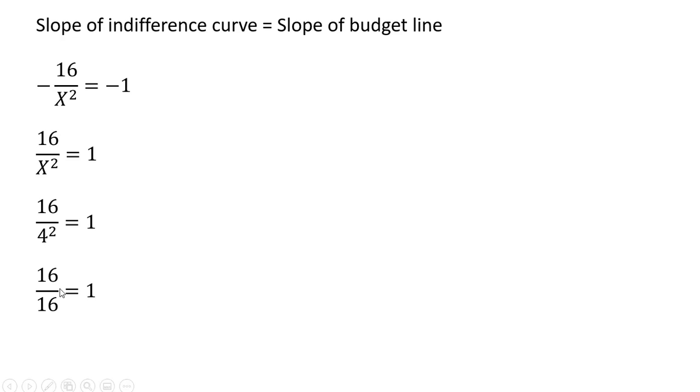And simplifying, the slope of the indifference curve does equal the slope of the budget line. So the consumer is maximizing utility at that consumption bundle: 4 units of good X and 4 units of good Y, where the price of good X and the price of good Y are a dollar each. I'll stop here.